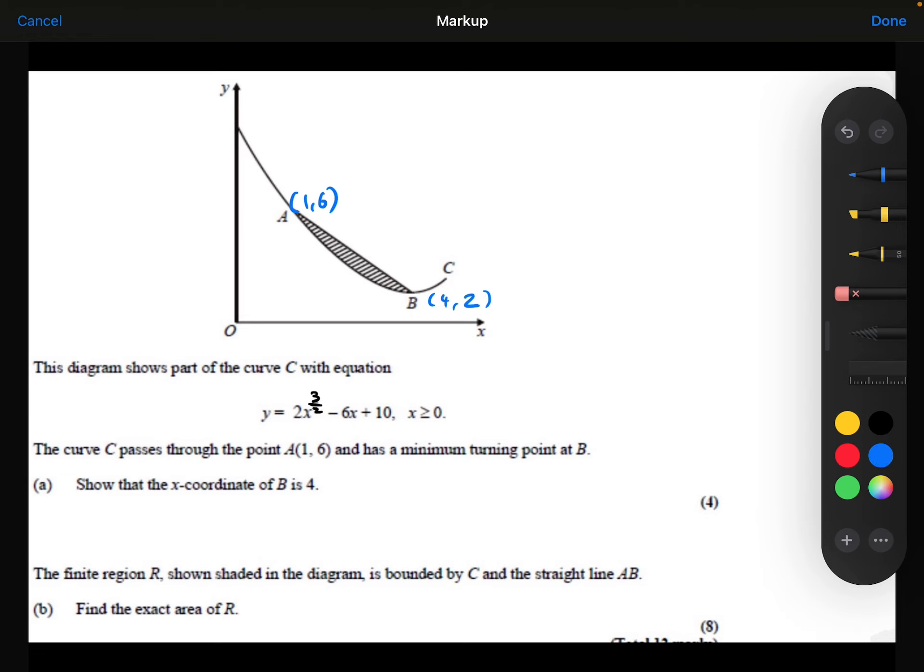Right, let's have a look at part B then. The finite region R, shown shaded in the diagram, is bounded by the curve and the straight line AB. I need to find the exact area of that shaded region.